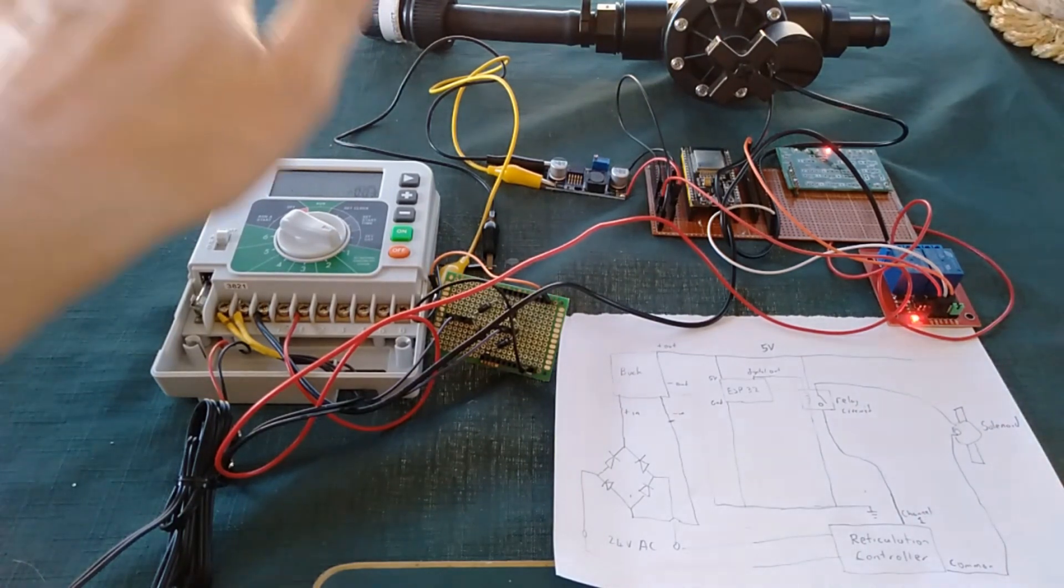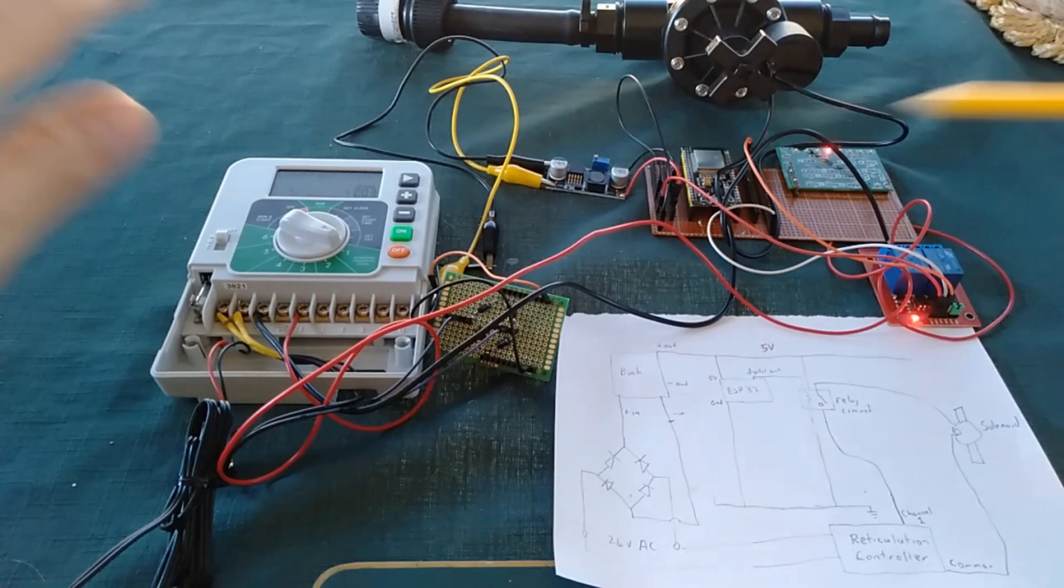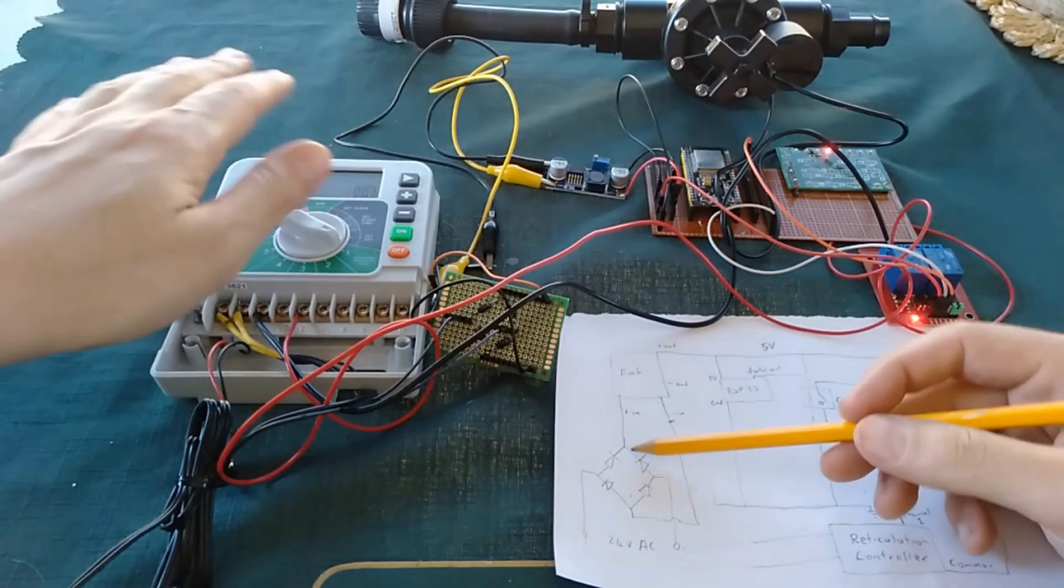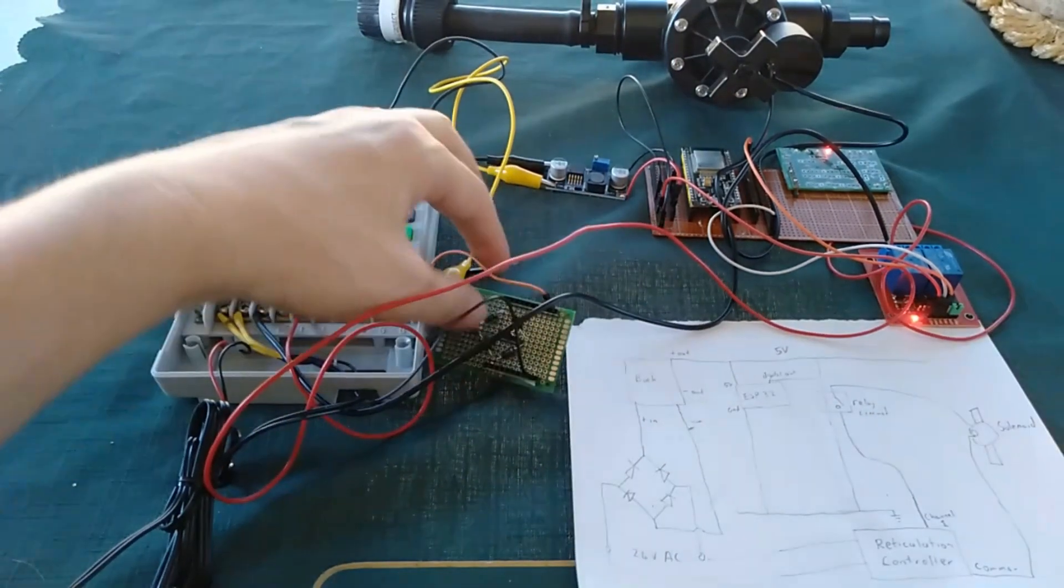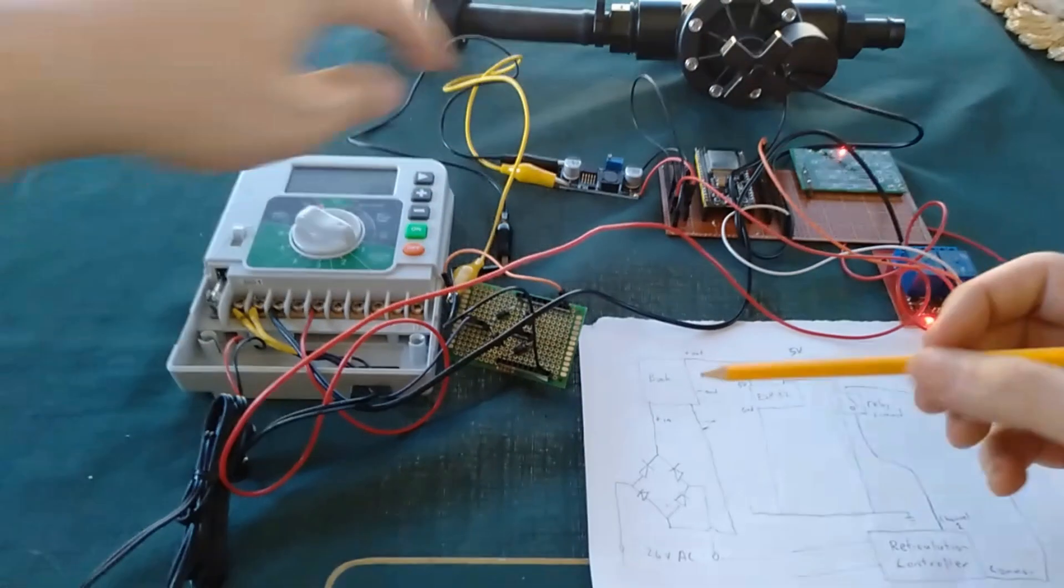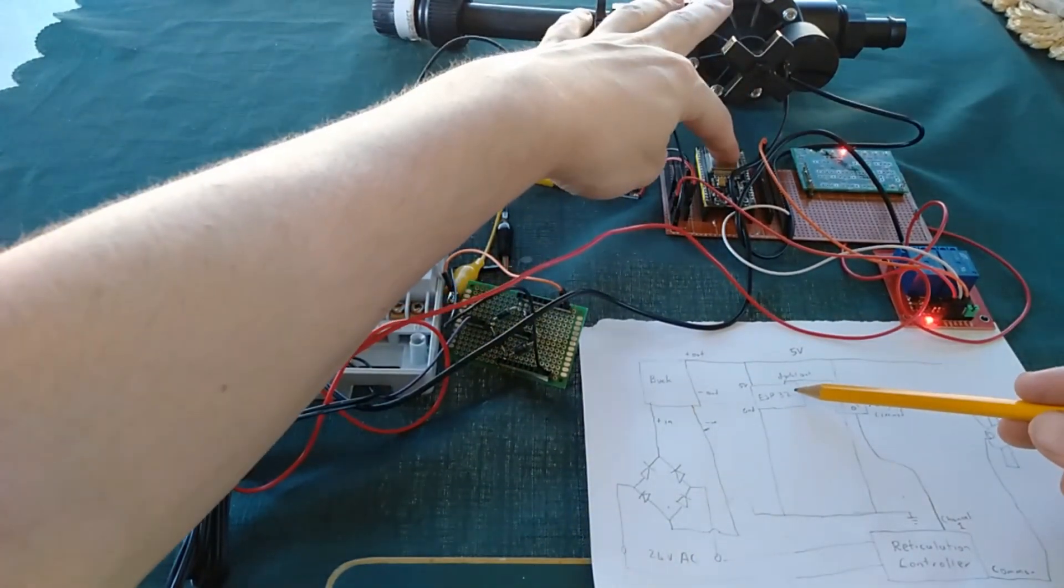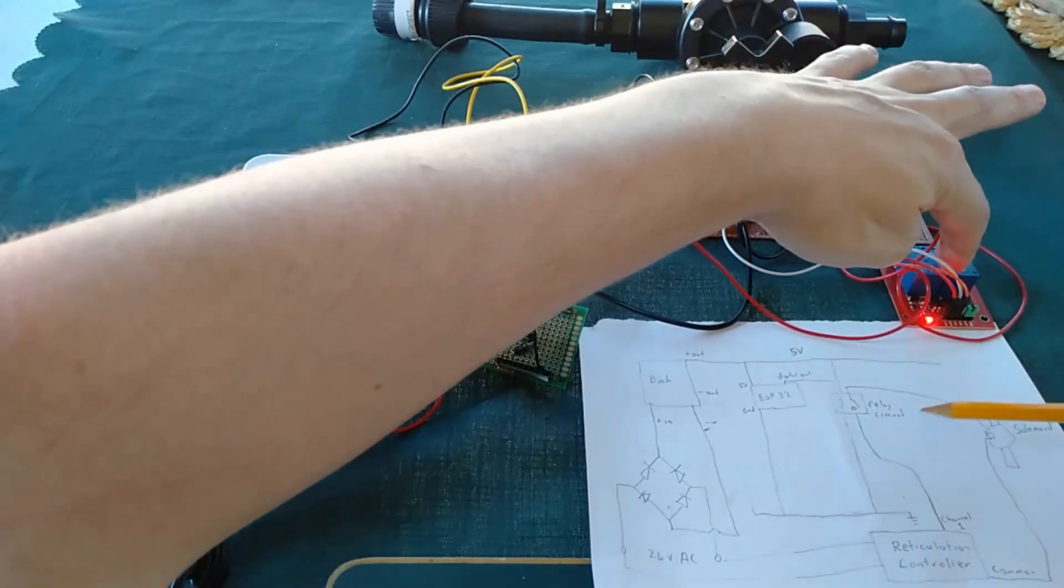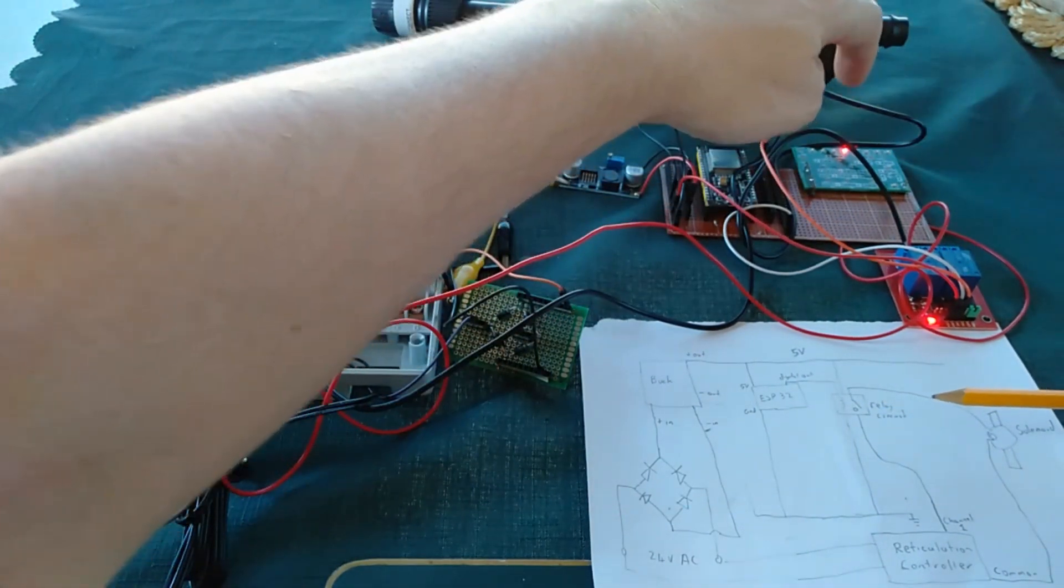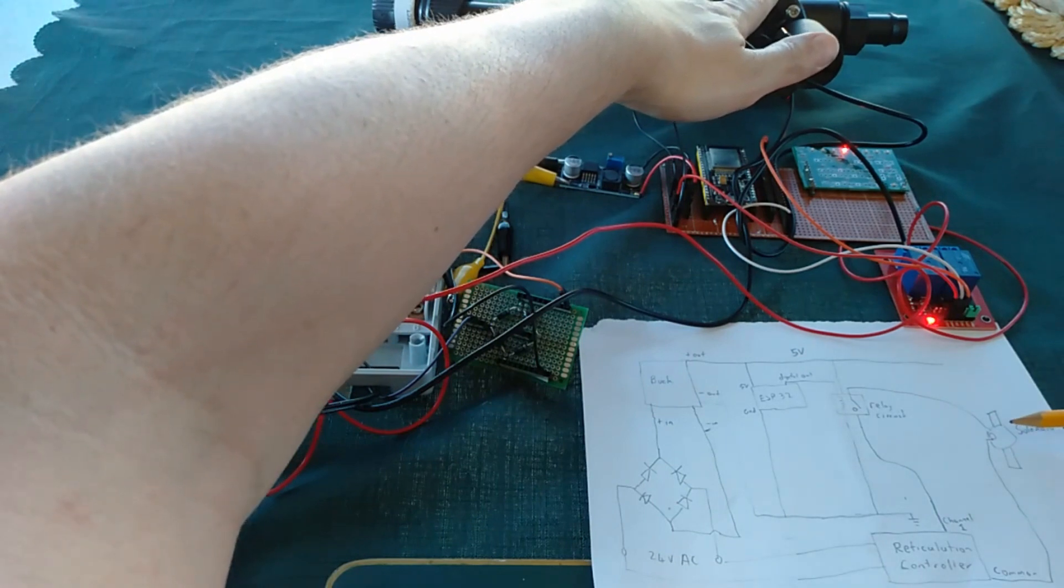Basically what we've got from the video before: we have the reticulation controller, we have the full bridge rectifier, we've got our buck converter up here, we have our ESP32 here, we have our relay unit here, and we have our solenoid valve over here.